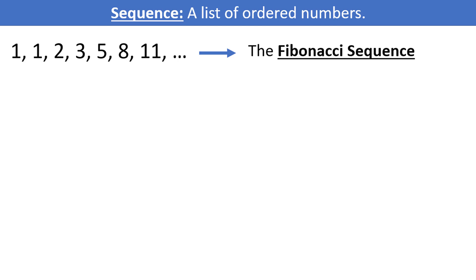The Fibonacci sequence is also an infinite sequence because, theoretically, it goes on forever. 2, 5, 8, 11 is another sequence. This is a finite sequence, since there are only four terms. It doesn't go on forever.